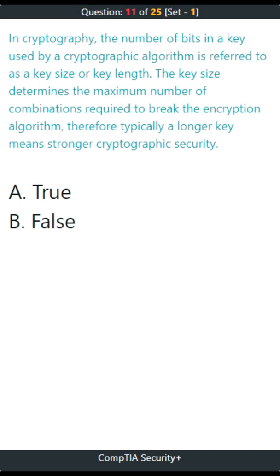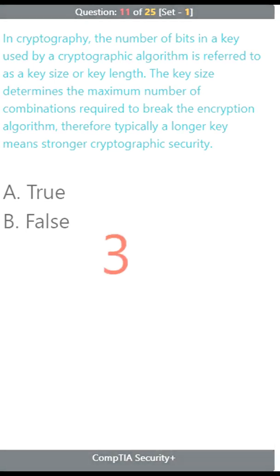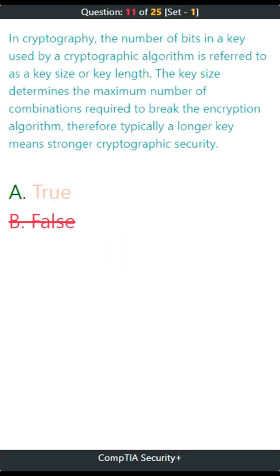Question 11. In cryptography, the number of bits in a key used by a cryptographic algorithm is referred to as a key size or key length. The key size determines the maximum number of combinations required to break the encryption algorithm; therefore, typically a longer key means stronger cryptographic security. A. True, B. False. The correct answer is A. True.